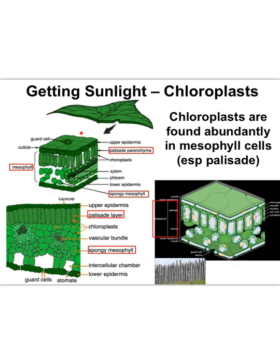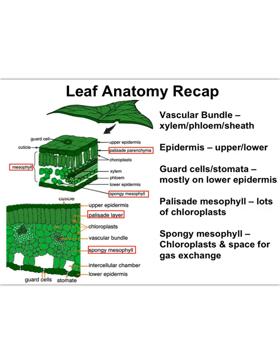Palisade mesophyll is at the top of a leaf where the sun strikes down. Because the sun strikes there, palisade mesophyll cells have more chloroplasts than the other cells. Concentrating the chloroplasts at the top of the leaf helps plants capture sunlight's energy more efficiently than if the chloroplasts were evenly distributed.